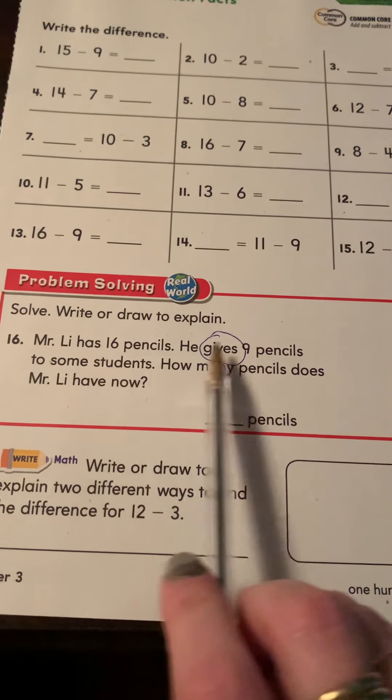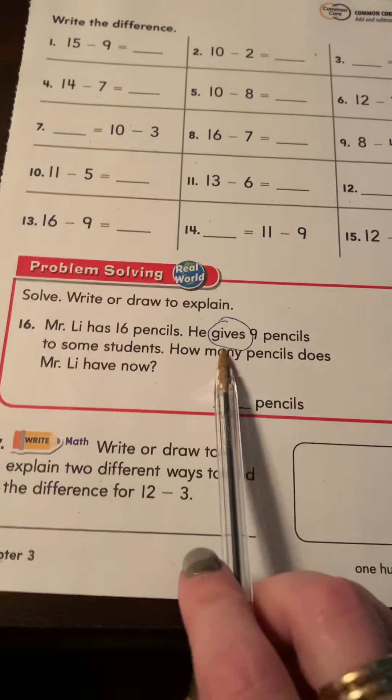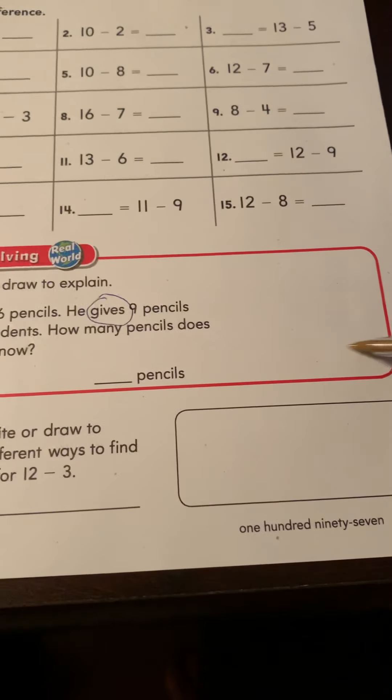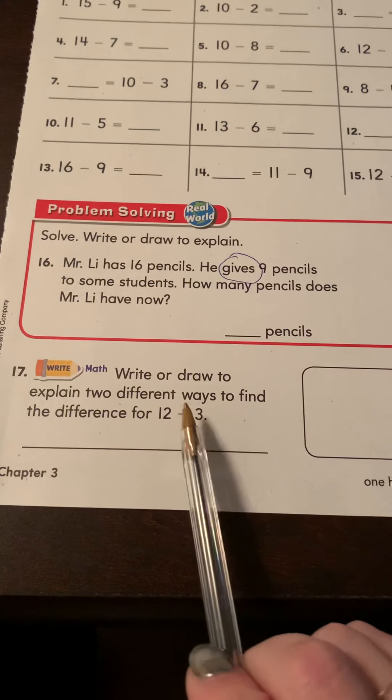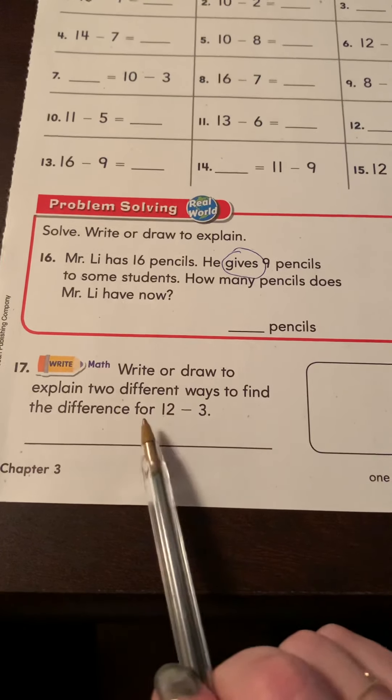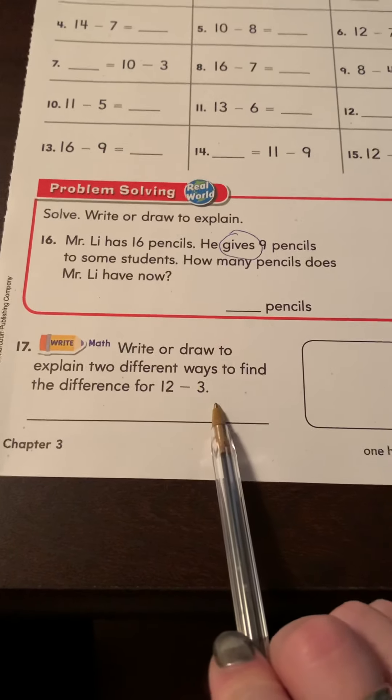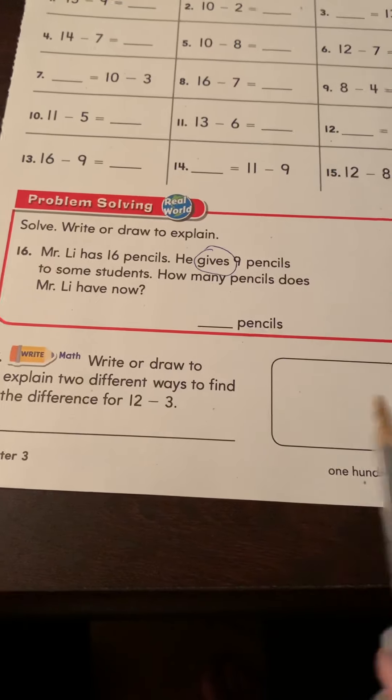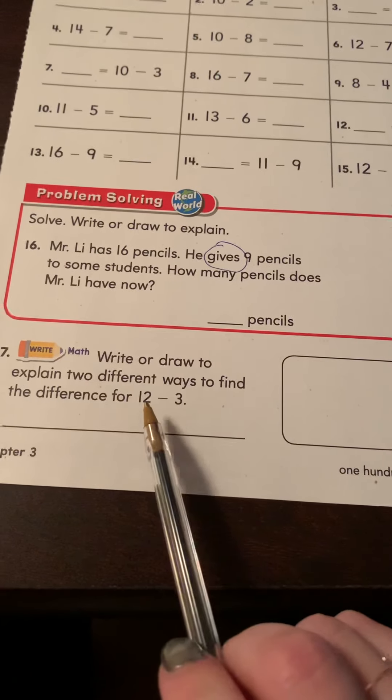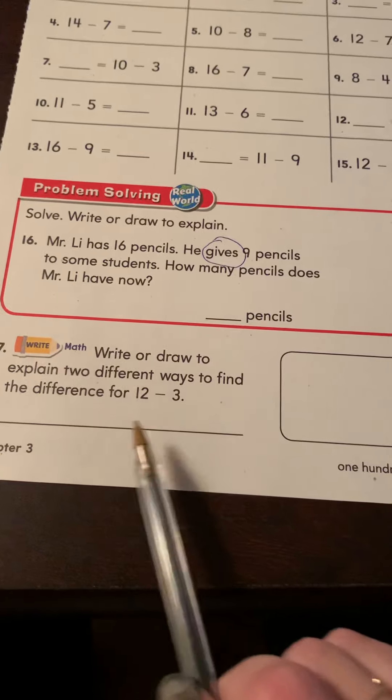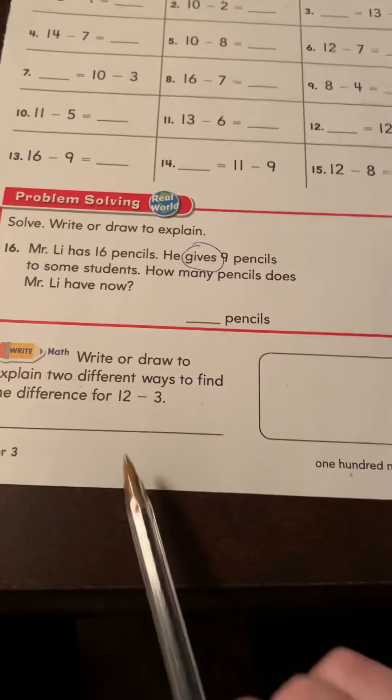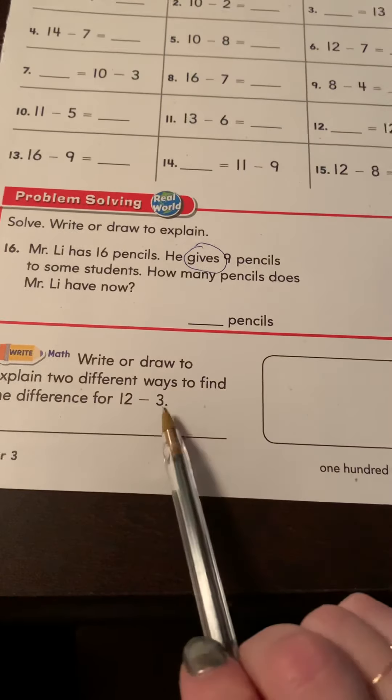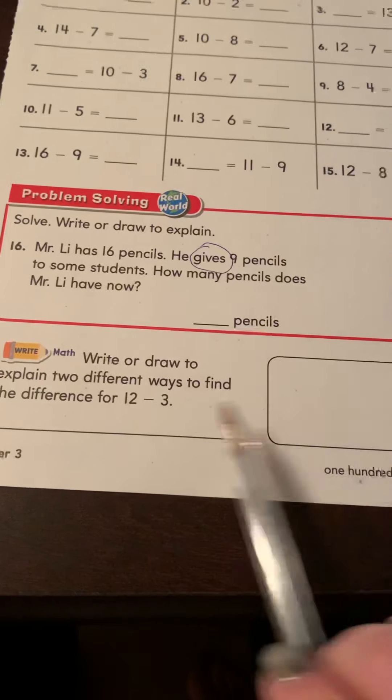So here's your first number and your second number. Figure out, picture in your mind what he's doing. Write a fact here and then the answer will be here. Write or draw to explain two different ways to find 12 minus 3. You can do counting back, you can do counting on, you can draw a picture of 12 and take away 3, you can do a related addition fact. Think of some different ways that you can solve that.